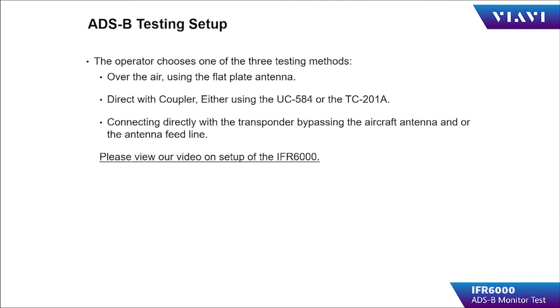The operator can choose from three methods of testing the aircraft. Over-the-air testing is used to test the aircraft from a distance of up to 50 feet without having to connect any equipment to the transponder antenna.